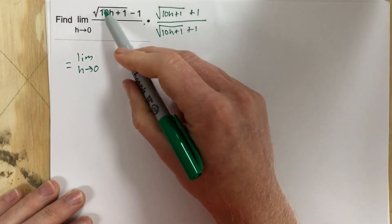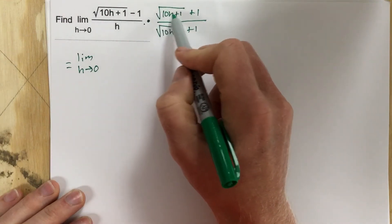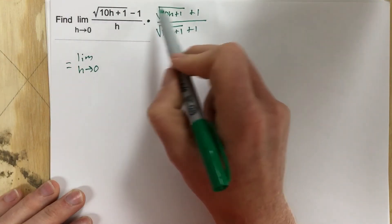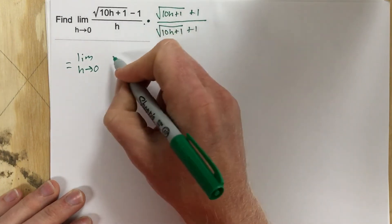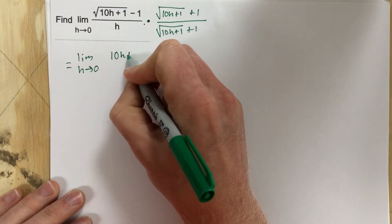But it allows me to go ahead and simplify this top and get rid of the radicals. So when I multiply this radical 10h plus 1 times radical 10h plus 1, I'm going to distribute this to each term and then distribute the negative 1 to each term. When I multiply those two, I just get 10h plus 1.